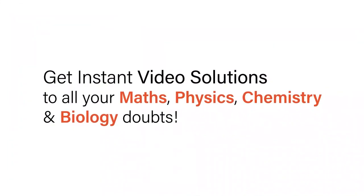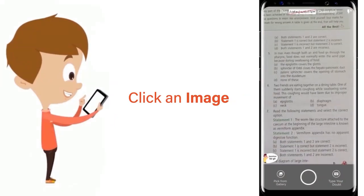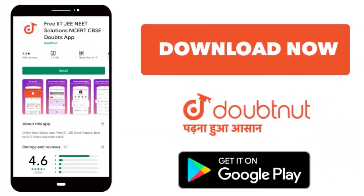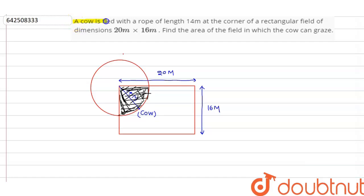With Doubtnet, get instant video solutions to all your maths, physics, chemistry, and biology doubts. Just click the image of the question, crop it, and get instant video solutions. Download the Doubtnet app today. Our question is: a cow is